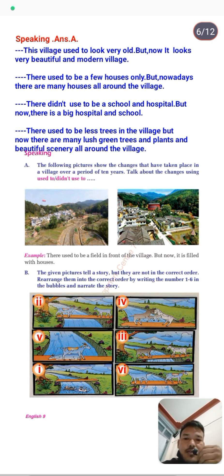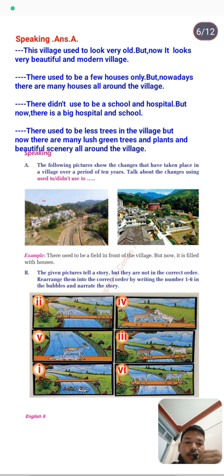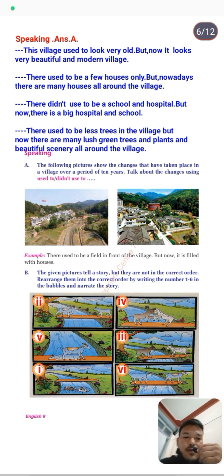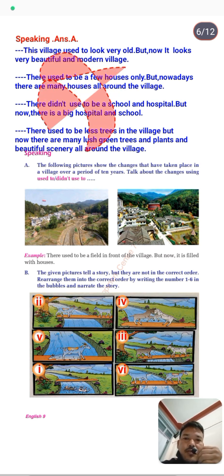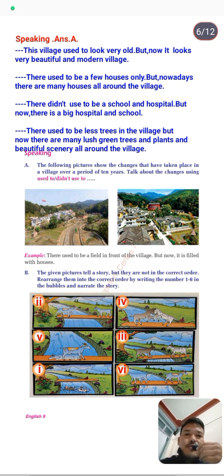For example: 'There used to be a field in front of the village, but now it is filled with houses.' Here are the answers: 'This village used to look very old, but now it looks very beautiful and modern.' In the first sentence I used 'used to' because we are talking about the older picture — the past — and in the second sentence I use present tense because we are talking about the village today.